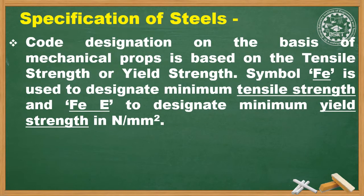Code designation is based on tensile strength or yield strength. The symbol Fe is used to designate minimum tensile strength, and Fe is used to designate minimum yield strength, both in N/mm².